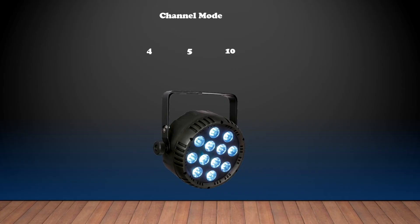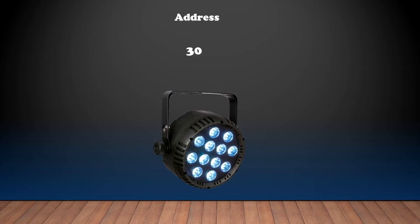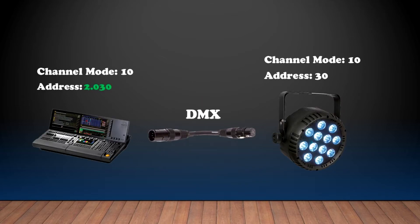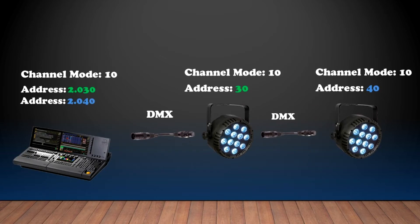For example, this LED light in particular can run 4, 5, or 10 different channel modes. So let's say we choose channel mode 10 — this light will take 10 channels from our DMX chain. So let's choose a number: let's say number 30. We have to ensure that the address on the light is showing number 30. If on Universe 2, then Universe 2.030. If it is on Universe 1, then it will be 1.030, so they can communicate with each other. Now the second LED light will have an address number of 40, because the first one is already taking those 10 channels. If we chose number 31, then the second one would be 41.